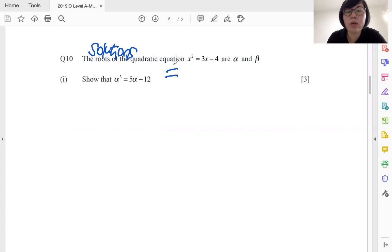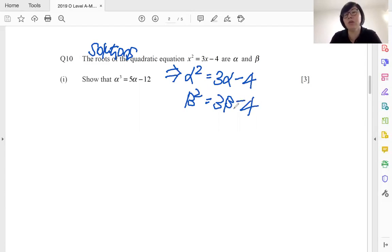That means through this statement itself you can understand that if I were to substitute alpha and beta into the equation, that will make the equation true. Which means to say I can tell you that alpha squared is equals to 3 alpha minus 4, or beta squared is equal to 3 beta minus 4. So that is the meaning of roots of the quadratic equations are alpha, beta.